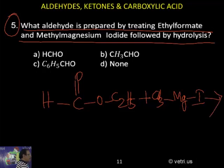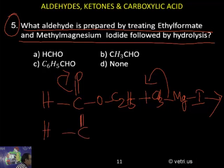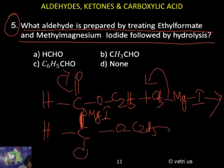So what will happen now here? So this will be treated like this. Addition reaction. Undergoes addition. So H-C double bond, that is EO, MgI, O-C2H5, and then CH3. This is the intermediate.